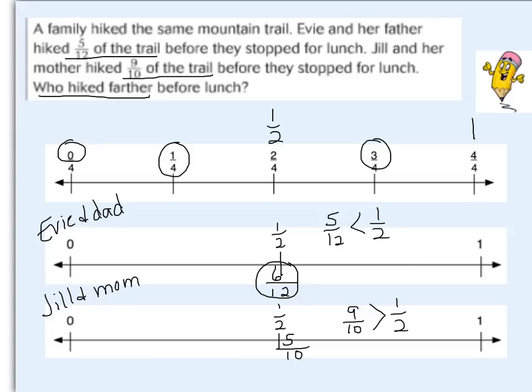Let's also see using the benchmarks of one-fourth and three-fourths to find exactly where they fell. Going back to Evie and her dad: if six-twelfths is a half, and one-fourth is halfway between zero and a half, then half of six is three, so three-twelfths marks the one-fourth position. Evie hiked five-twelfths, so counting up — three, four, five, six — that's about where she was. Note: that should be five-twelfths, not five-sixths.